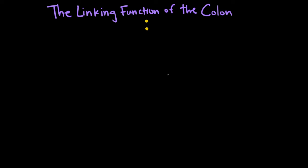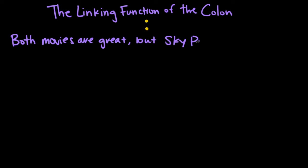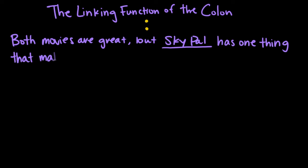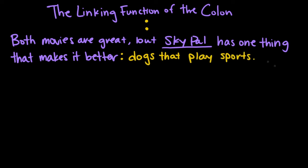So if I want to tell someone what I think about two movies about animals, I could say: both movies are great, but SkyPal has one thing that makes it better — dogs that play sports. This is one sentence with two parts linked with a colon. The first part says both movies are great but SkyPal has one thing that makes it better, and that could stand alone as a sentence, but it doesn't tell us what that one thing is. So the colon comes in and tells us, I'm about to tell you what that thing is: dogs that play sports. The colon serves as a connection between the first part of the sentence and the second part.